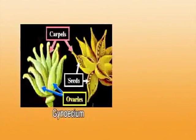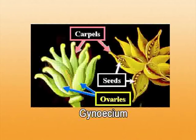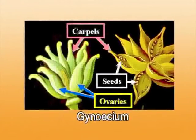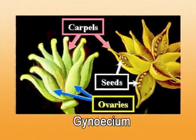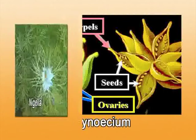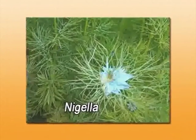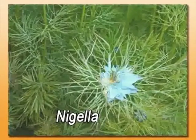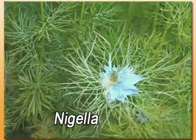Coming to the female part of the flower, the gynoecium, it is polycarpellary, meaning the carpels are free — apocarpous. At the base of the gynoecium is the ovary, which is superior. It is unilocular; its style is just one, and the stigma is simple and one in number. Coming to its placentation, it is mostly basal, or it can be marginal sometimes, or rarely axile — axile placentation occurs in the genus Nigella.